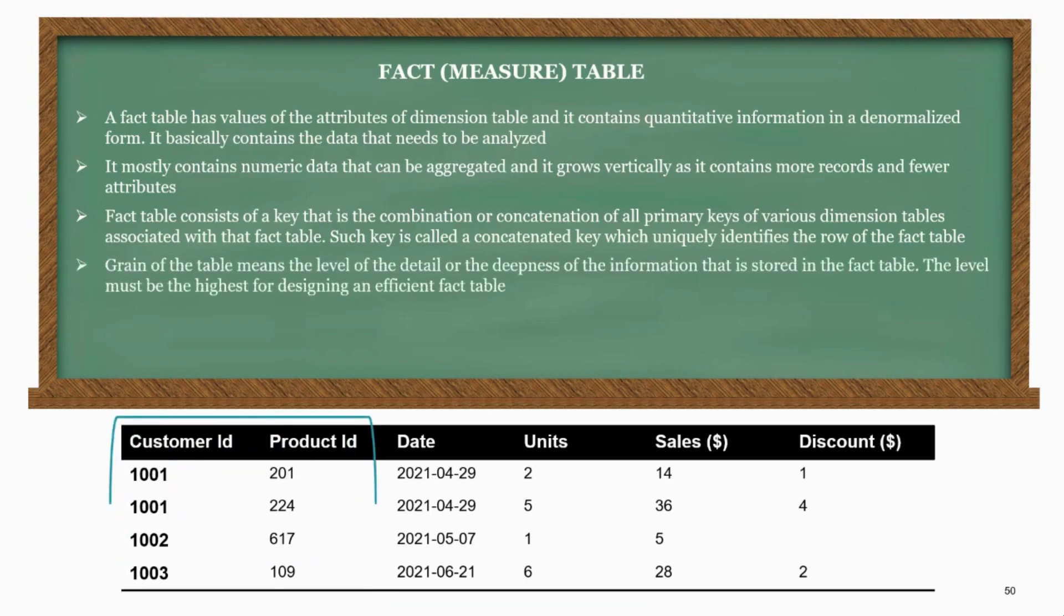Grain of the table means the level of the detail or the deepness of the information that is stored in the fact table. The level must be the highest for designing an efficient fact table.